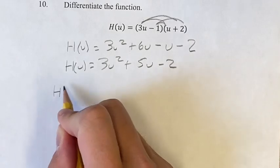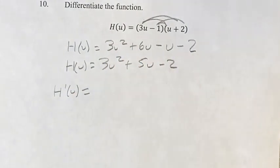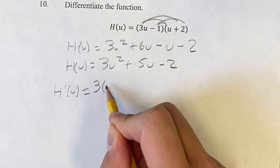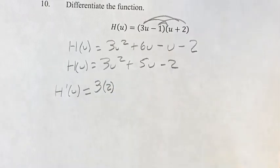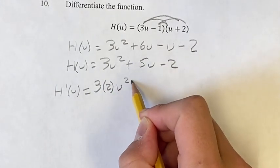Okay, so our derivative, h prime of u. So for this first term, how do we find the derivative of this? We take the exponent and bring it down. So 3 times 2, bring the 2 down to the coefficient, and we have u to the 2, which is what we have, and then we subtract 1.